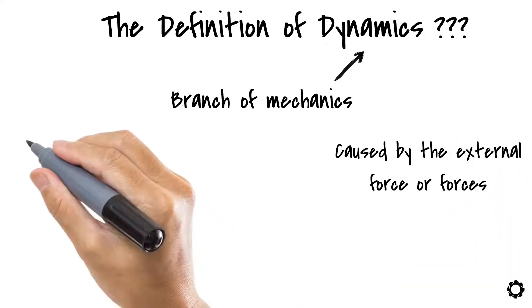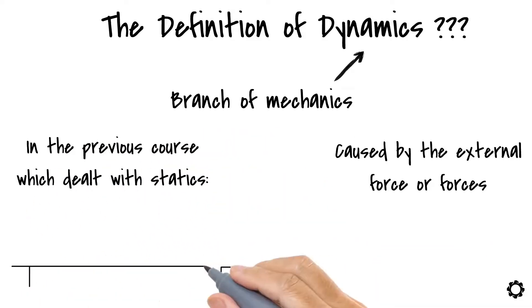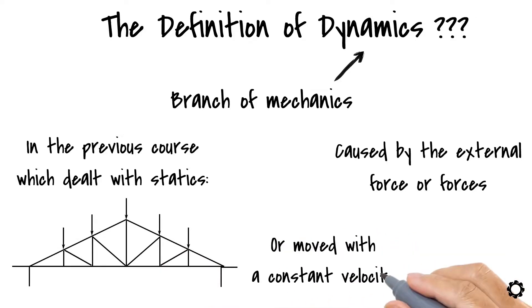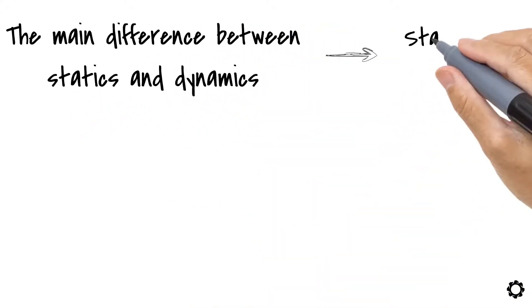If you recall, in the previous course which dealt with statics, we only studied the systems which were at rest or moved with a constant velocity. So as you can see, the main difference between statics and dynamics is the state of equilibrium.